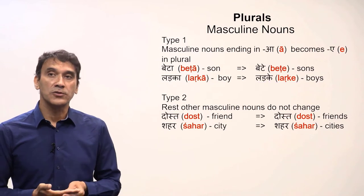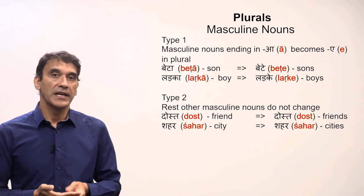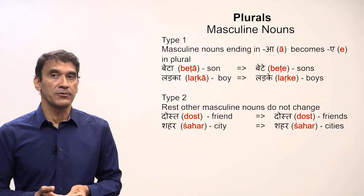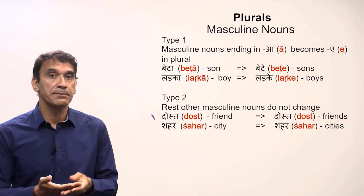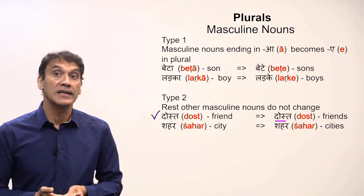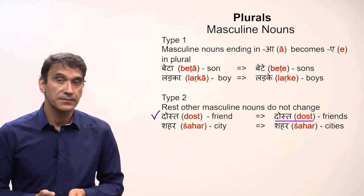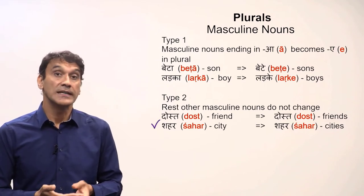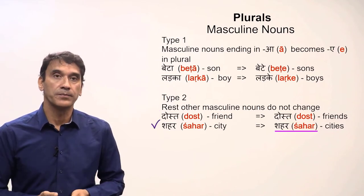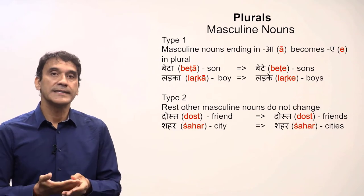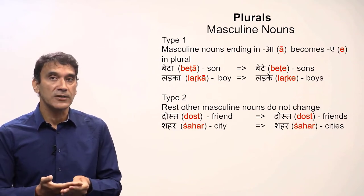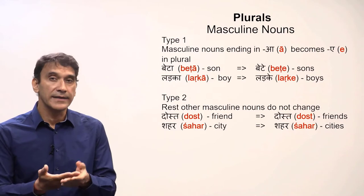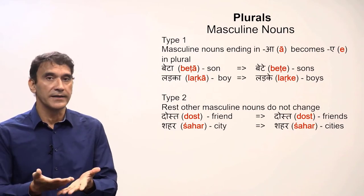The rest of the masculine nouns do not change. If a masculine noun does not end in 'a', it does not change in the plural. For example, 'dost' meaning 'a friend' — the plural is also 'dost' meaning 'friends'. Another example: 'shahar' meaning 'a city' singular, 'shahar' meaning 'cities' plural. In the second type you do not see the difference between singular and plural, but the context in a sentence will make it clear.